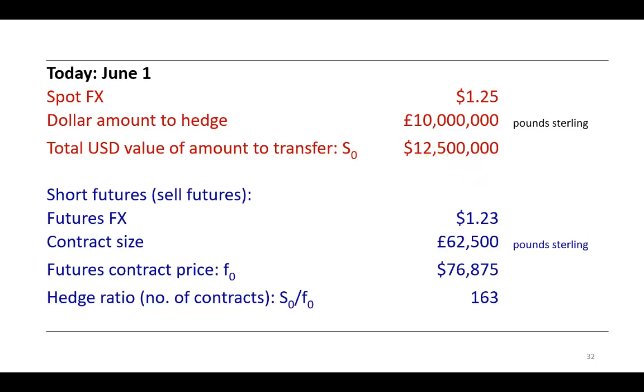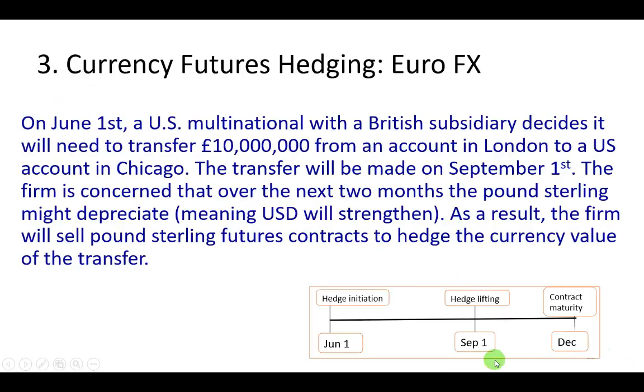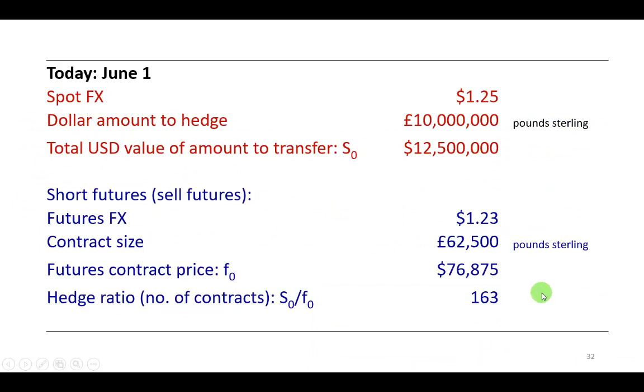So to hedge this currency risk, you're going to sell pound futures in a short hedge. And let's say that right now the futures price for the maturity that you see, which in this illustration is the September futures, is $1.23. So now remember the contract size for the British pounds sterling contract is £62,500.